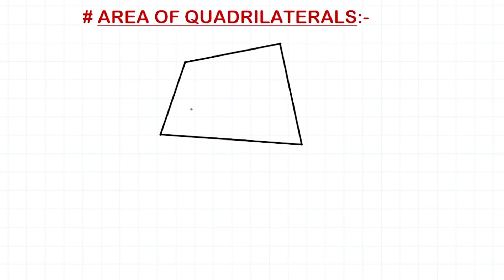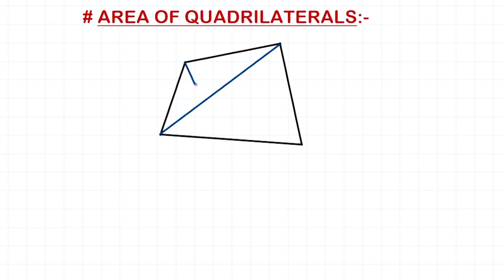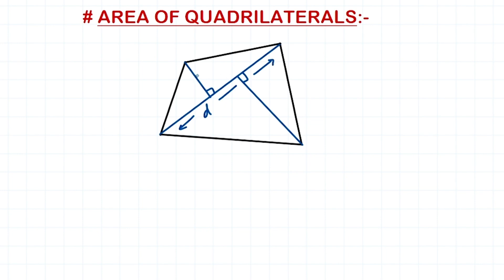Now, what is the formula to find the area of this quadrilateral? The formula involves the diagonal. We need a diagonal and then we need two perpendicular lines from the opposite vertices of this quadrilateral — one from there and one from here. So we have two perpendicular lines and a diagonal. We can name these with any letters we want, but I'm going to assume this diagonal is D.